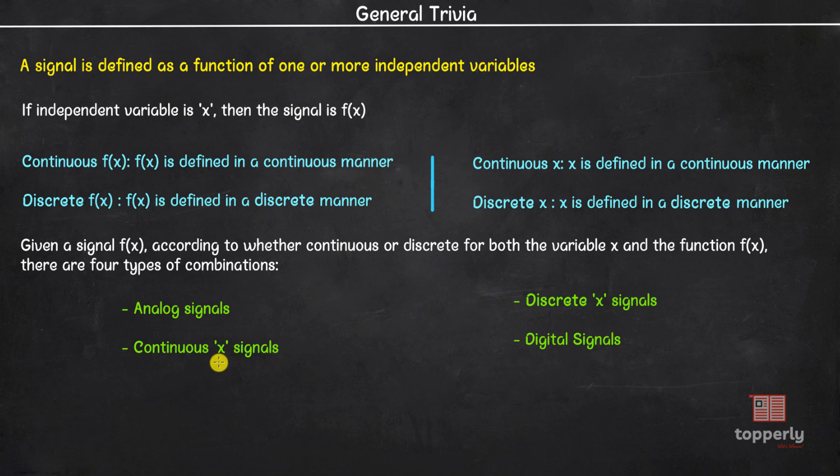Now here if the variable x is time, then we will call it as continuous time signals. Similarly, discrete time signals.